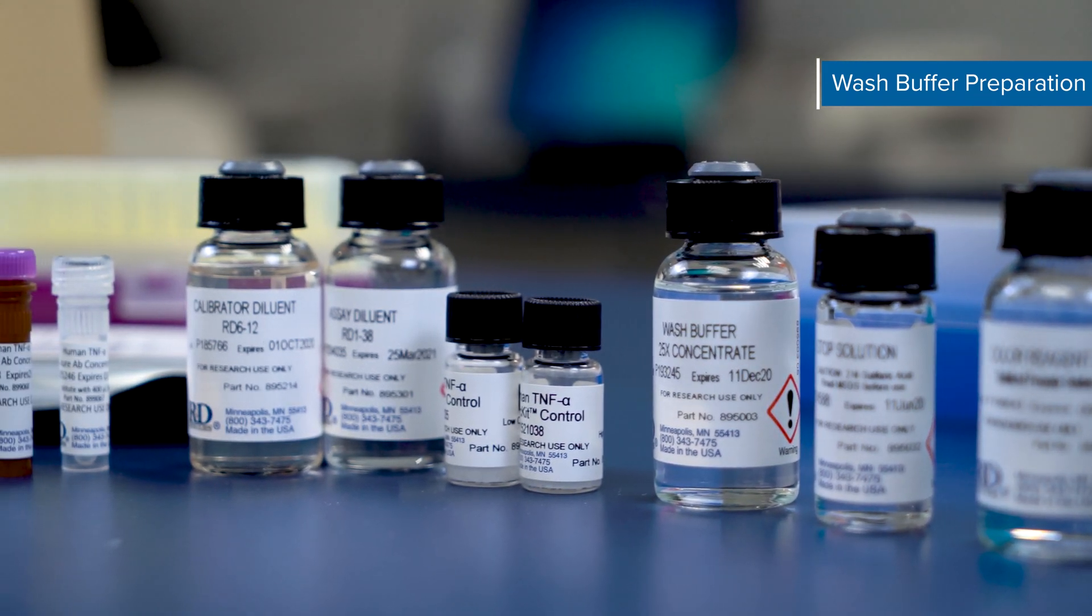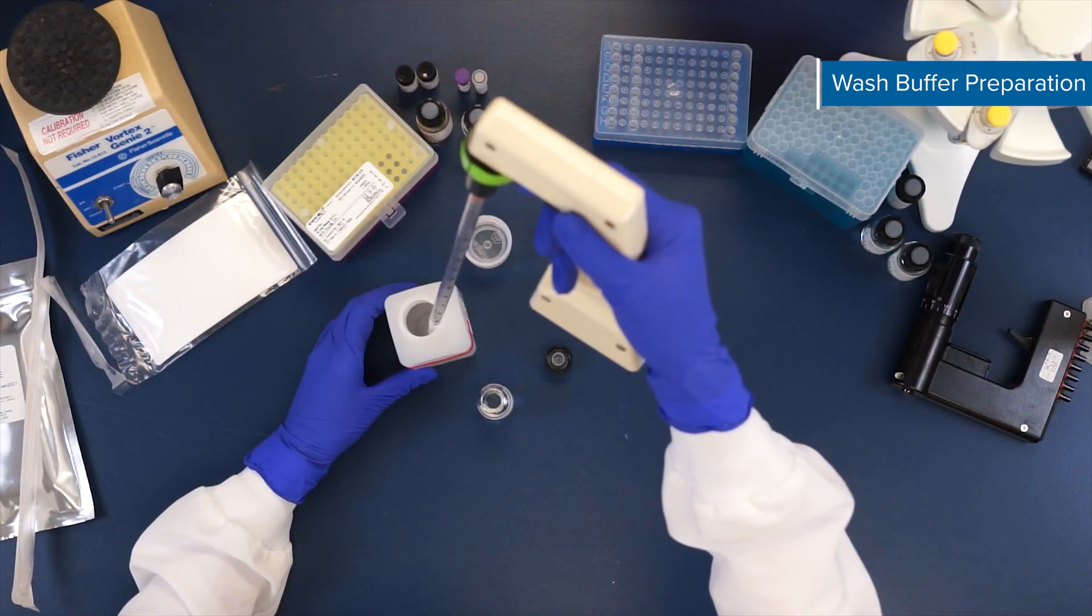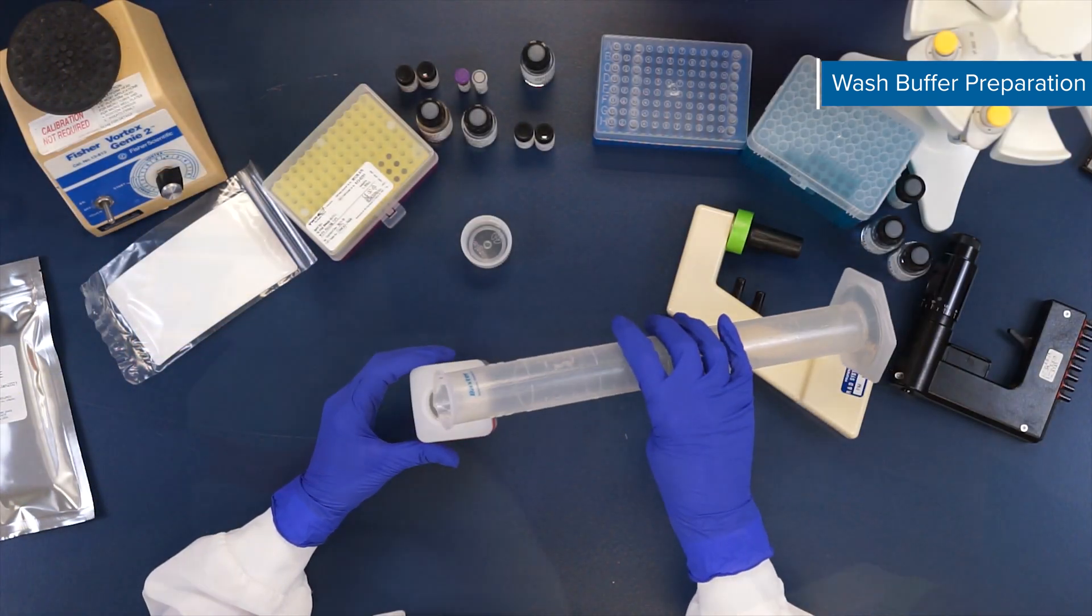To prepare your wash buffer, add 10 mL of wash buffer concentrate to 240 mL of deionized or distilled water in a graduated cylinder to yield 250 mL of wash buffer. Mix gently.